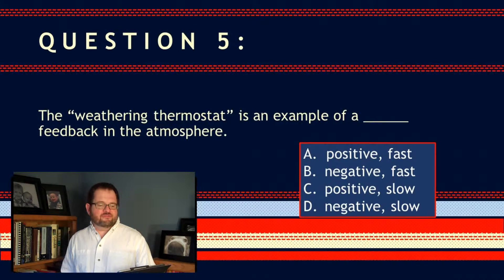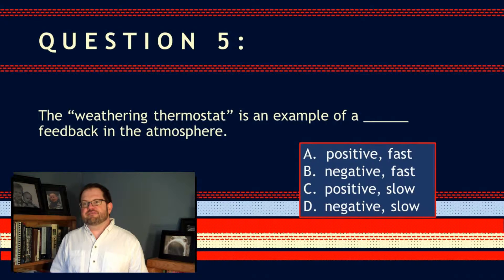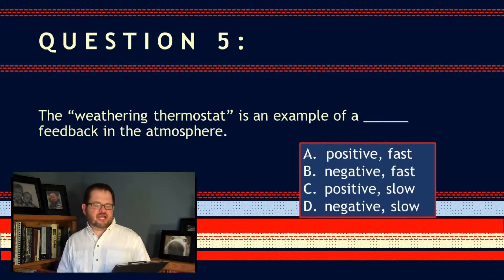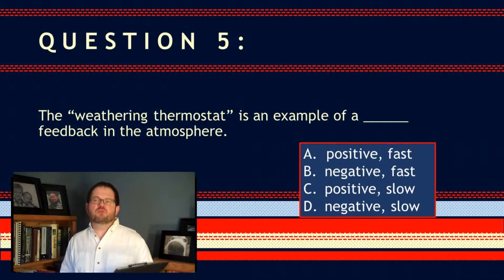Alright, here we go with question number five. The weathering thermostat is an example of a blank feedback in the atmosphere. Positive and fast, negative and fast, positive and slow, negative and slow.